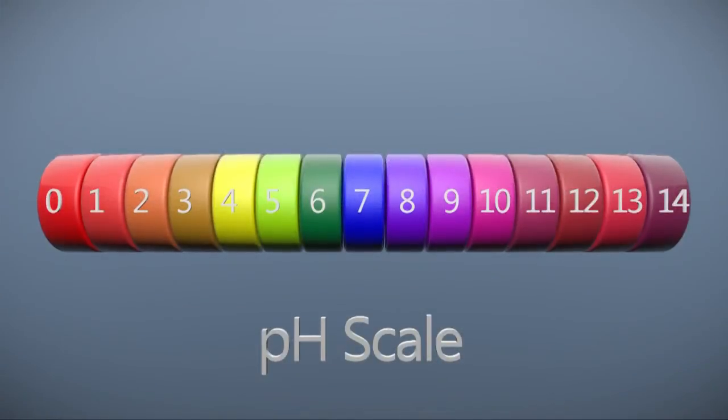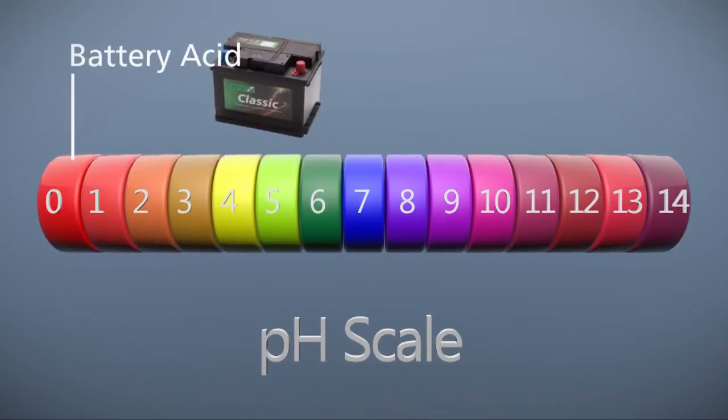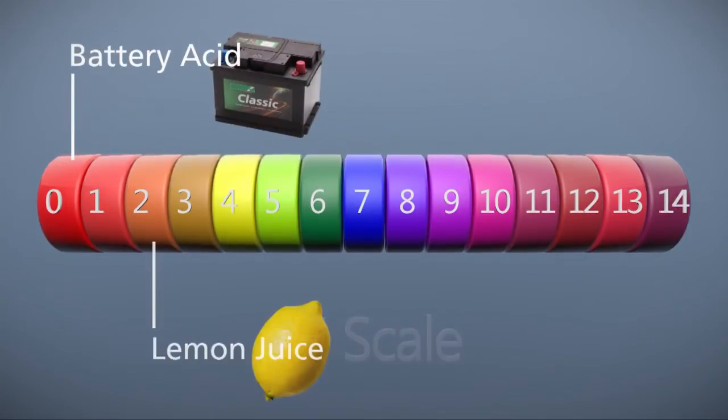As we can see, the pH scale is numbered 0 to 14. Let's stick some common items on there. Battery acid will typically have a pH of 0. Lemon juice, again acidic, has a pH of 2. Neutral, which is where acidity and alkalinity are balanced, is about pH 7.